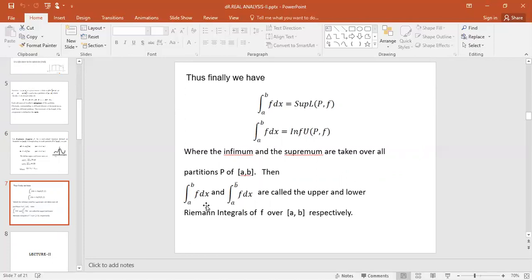Where the infimum and supremum are taken over all partitions P of [a, b], these integrals are called the upper and lower Riemann sums of f over [a, b]. The question here is: which functions are Riemann integrable? We will see that if the lower and upper integrals are equal, then we claim that f is Riemann integrable.